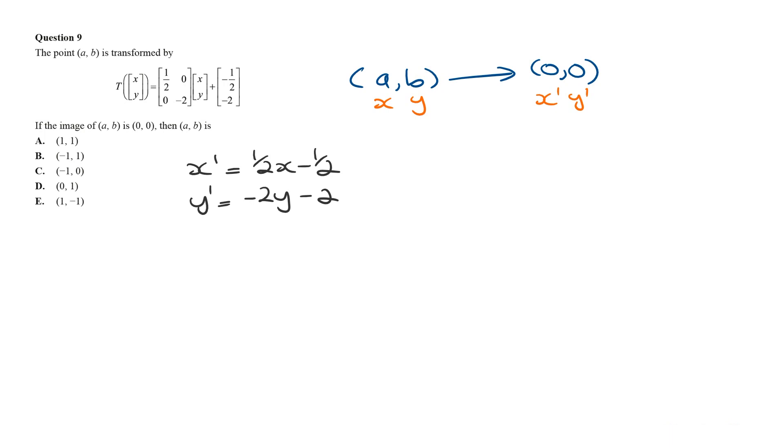If x dash is the point 0, then we can say that half x minus a half has to be 0. And solving for x, we're going to get a half x is equal to a half, and so x is going to be 1.